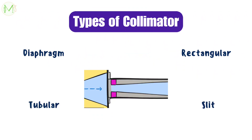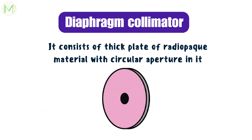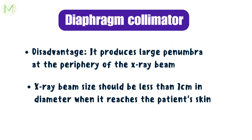The types of collimators are diaphragm, tubular, rectangular, and slit type. The diaphragm type of collimator consists of a thick plate of radiopaque material with a circular aperture in it. The size and shape of the aperture or hole determine the size and shape of the X-ray beam.